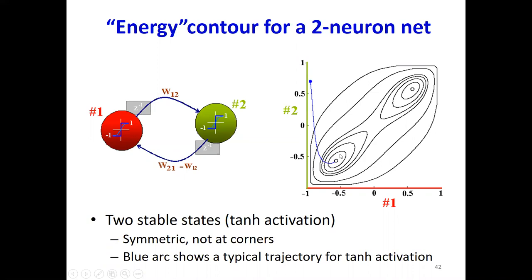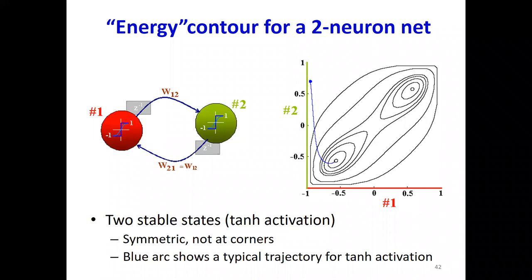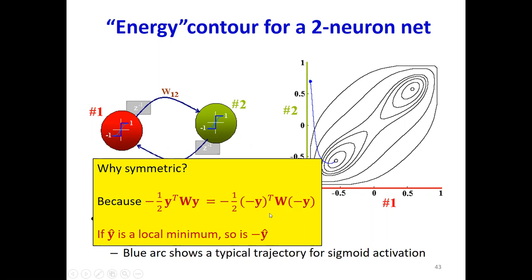This is for a tanh activation. There are two minima — one at the bottom left, one at the top right. Can anyone guess why there are two minima? The energy is a symmetric function — if I replace y by minus y, these two minuses cancel out. So the energy of y-transpose W y is the same as the energy of minus y-transpose W minus y, which is why if y-hat is a minimum, so is minus y-hat.